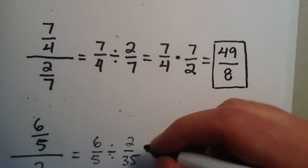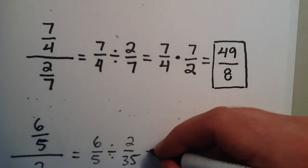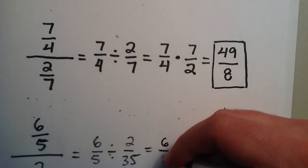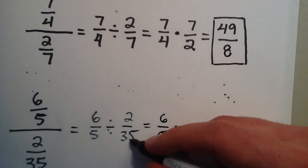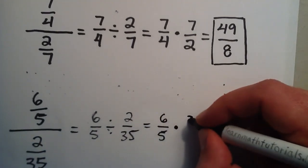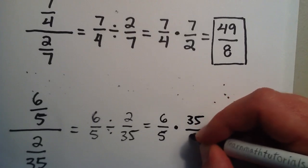Alright, the 6 over 5 is the same. We change the division to a multiplication sign once again, and the 35 over 2 gets put here, flipping the 2 over 35.